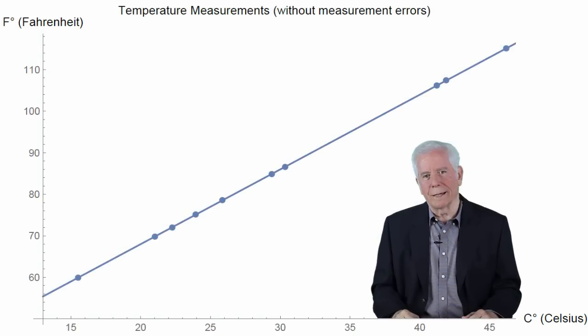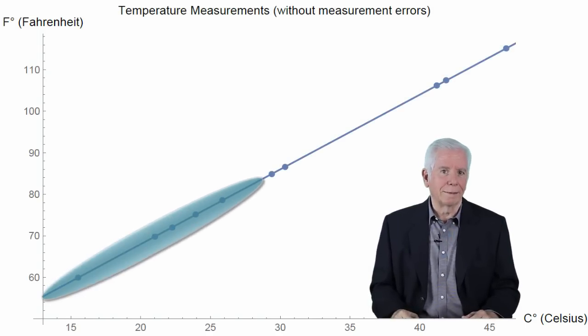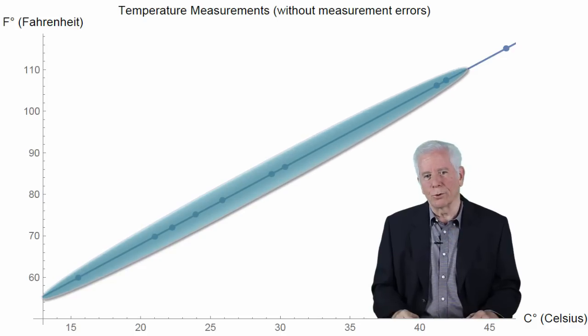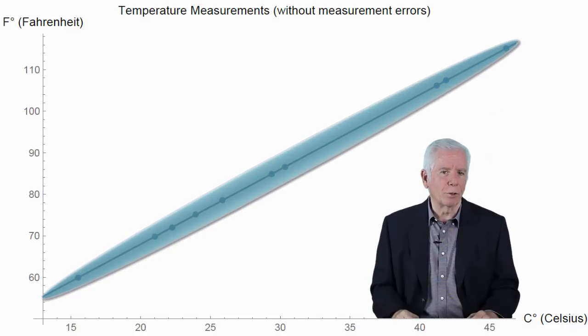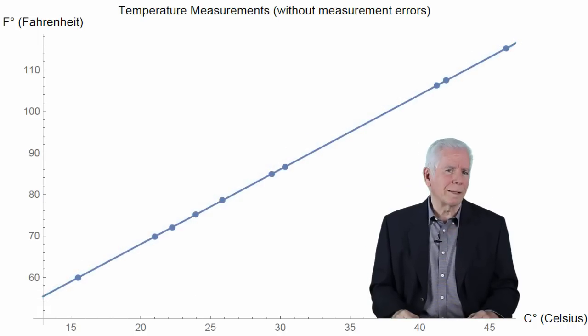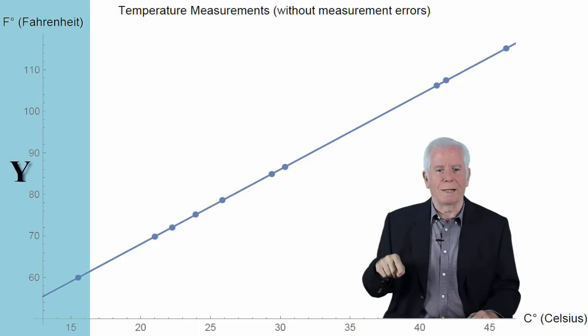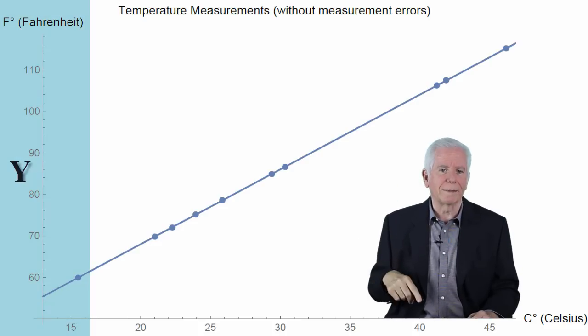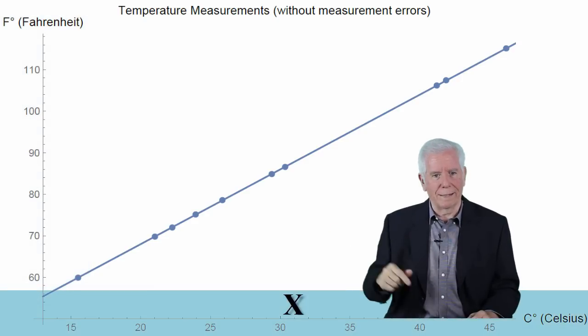Obviously, the points are aligned on a straight line, since transition from one scale to another is achieved by multiplying by a certain number and then adding another. This is an equation of a straight line, in which Y represents one scale, for example Fahrenheit, and X represents the other scale.